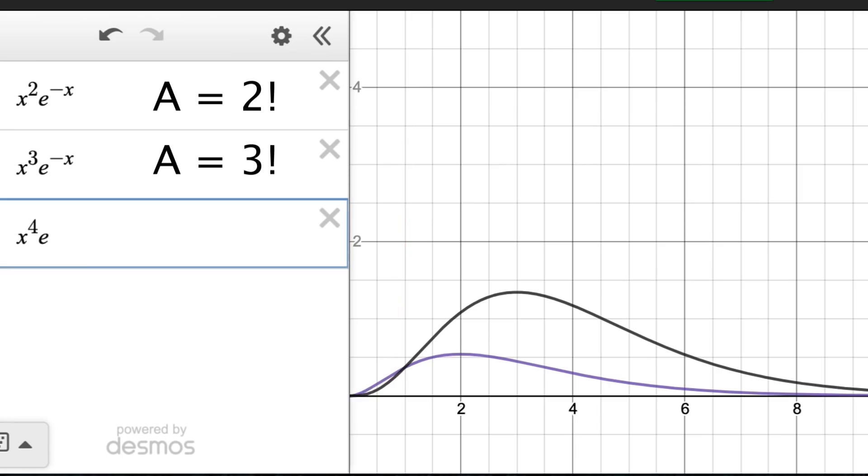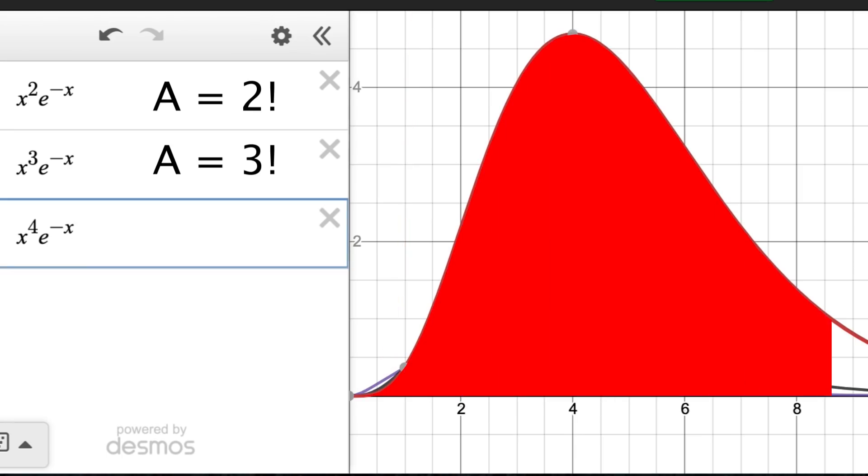And here's x to the 4th times e to the minus x, whose area from 0 to infinity is 24, or 4 factorial. So as you can see, the exponent here, factorial, will equal the area under the curve from 0 to infinity.